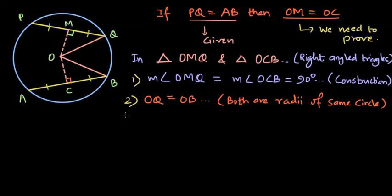Now let's see if we can find something else. We already know that PQ is equal to AB. Therefore, the half of both of them should be equal as well. We already know M is the midpoint of PQ and C is the midpoint of AB.